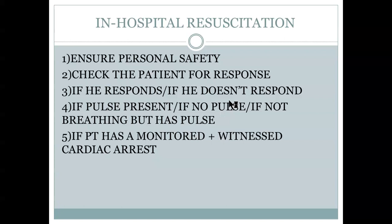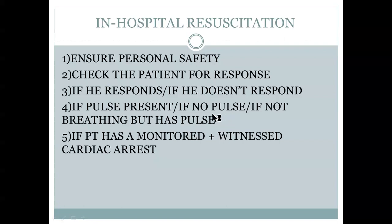Start BLS: 30 chest compressions to 2 ventilations (30:2). In hospital, use airway adjuncts such as an oropharyngeal or nasopharyngeal airway to prevent the tongue from falling back and occluding the airway. Continue CPR 30:2 until ALS help arrives.